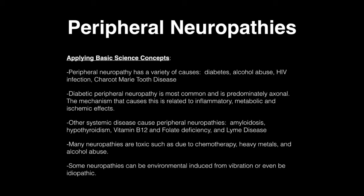Peripheral neuropathy has a variety of causes including diabetes, alcohol abuse, HIV infection, and Charcot-Marie-Tooth disease. Diabetic neuropathy is the most common and is predominantly axonal; the mechanism is related to inflammatory, metabolic, and ischemic effects. Other systemic diseases causing peripheral neuropathy include amyloidosis, hypothyroidism, vitamin B12 and folate deficiency, and Lyme disease. Many neuropathies are toxic, such as due to chemotherapy, heavy metals, and alcohol abuse. Some neuropathies can be environmental, induced from vibration, or can even be idiopathic.